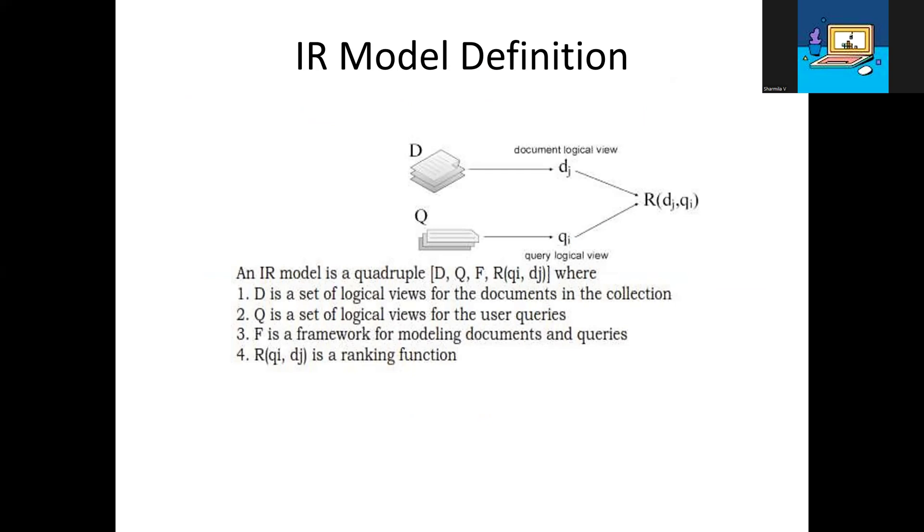In the IR model definition, there is a document logic view and query logic view. Documents are stored in the repository, and when query Q is given to the web search engine, related documents are retrieved. Here, Q is a query, D is a document, and R is a ranking function R(d, q). The IR model is a quadruple with four components: D, Q, F, and R. D is a set of logical views of documents in the collection.